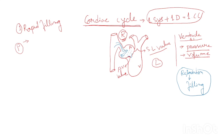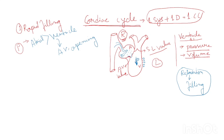As blood accumulates in the atria from the vena cava, the atrial pressure slightly increases. The ventricle is undergoing relaxation, and as the ventricle relaxes, the pressure in the ventricle decreases significantly. When the atrial pressure becomes higher than the ventricular pressure, the AV valve automatically opens up.